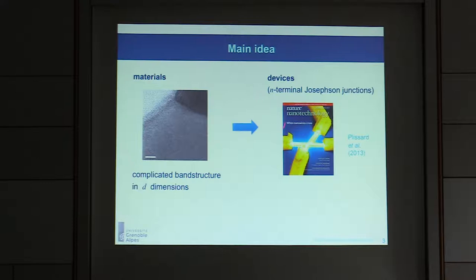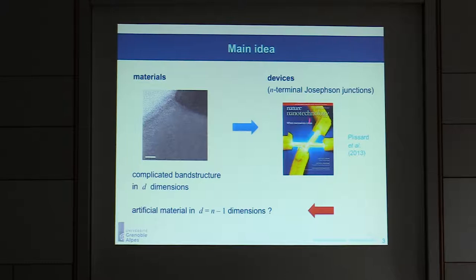What we want to talk about is devices, where you take a material that is not very unconventional, but by building a device out of it, you can get new properties. What's shown here is a cross of two nanowires coupled to four leads. These four leads could be superconductors, and the basic idea is that by looking at the device, you have degrees of freedom that can determine your effective dimensionality, making something like an artificial material.